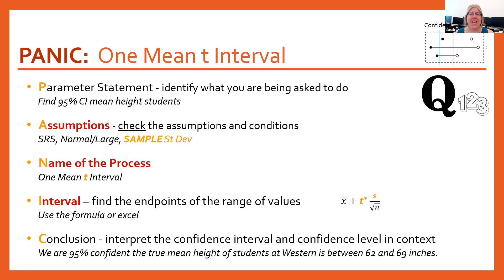The interval calculation itself changes just a little bit. Those endpoints are still x̄ plus or minus something, but instead of using a z-score, you have to find t* (t as in tiger with a star), and then you use s divided by the square root of n.